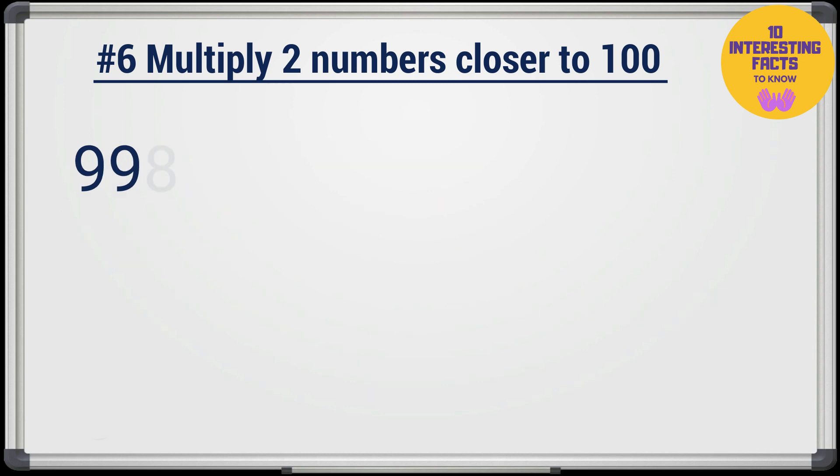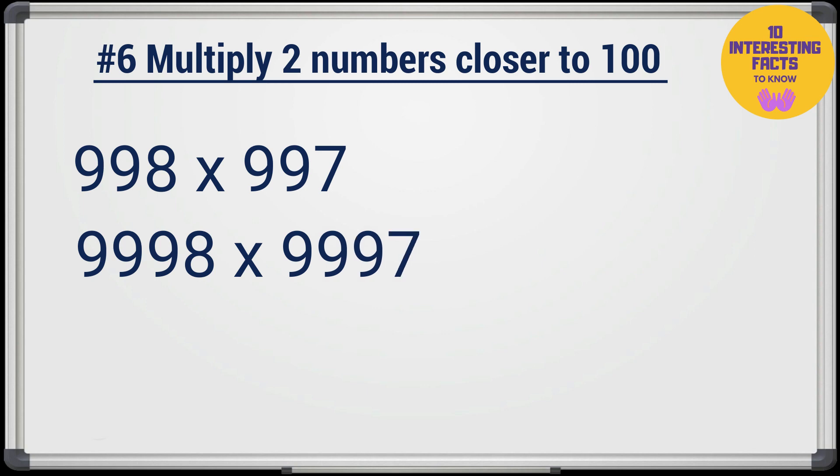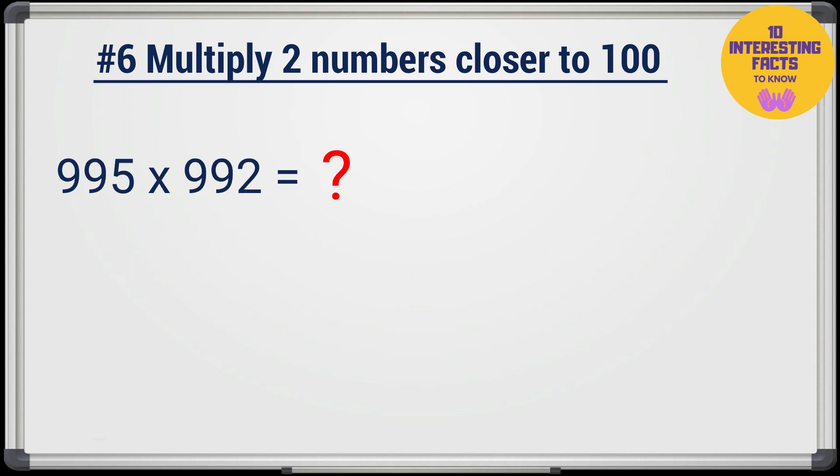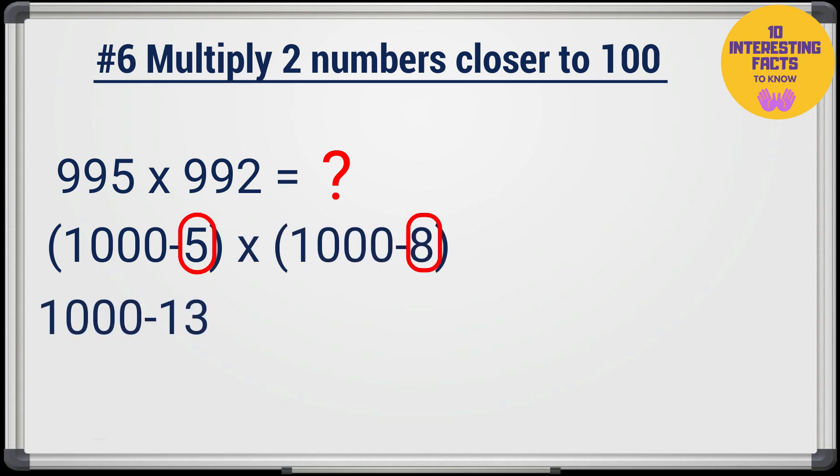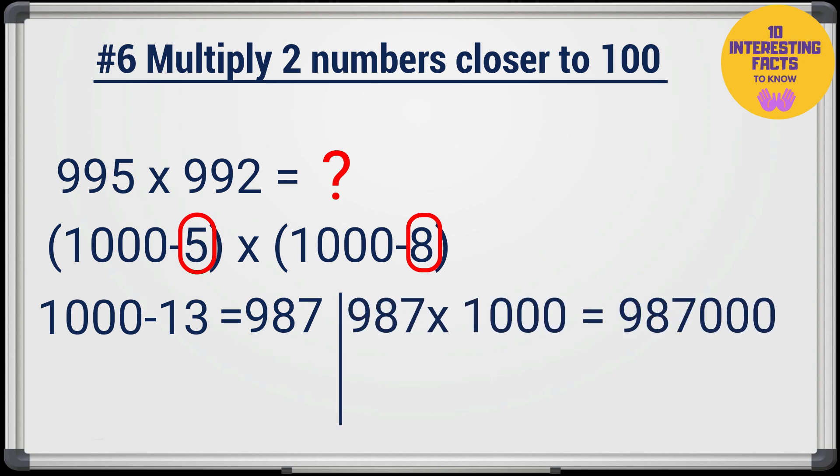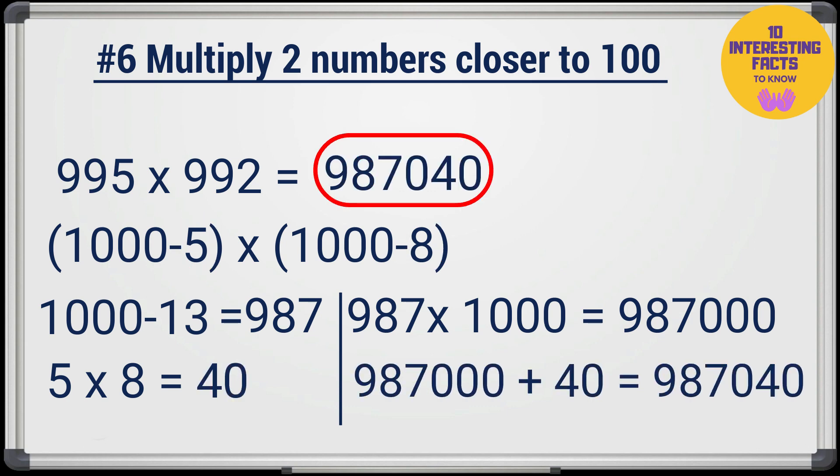Once you get the hang of it, try with numbers closer to 1000 or even 10,000 like this example of 995 times 992. It's amazing you can multiply such huge numbers in seconds, isn't it?